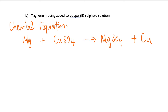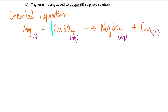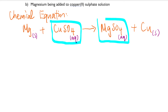Now for the physical states: magnesium is a metal, so it's a solid. Copper(II) sulfate is a solution, so AQ. Magnesium sulfate will also be a solution, AQ. And copper is a solid. The equation is already balanced — you can see all the atoms are perfectly balanced. Now that we know about ionic equations, these two aqueous compounds will be my focus.